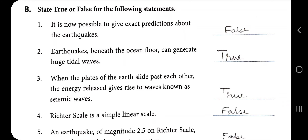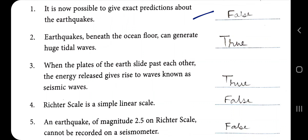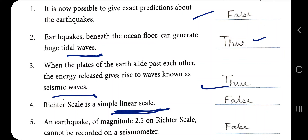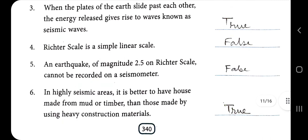True and false answers: It is now possible to predict earthquakes — partially true, some progress has been made but not to a full extent. Earthquakes beneath the ocean floor can generate huge tidal waves — very correct. When plates of the earth slide past each other, the energy released gives rise to seismic waves — correct. Richter scale is a simple linear scale — false, it is not a linear scale.